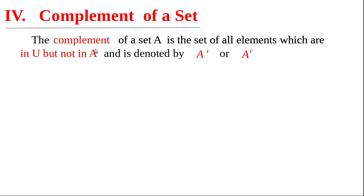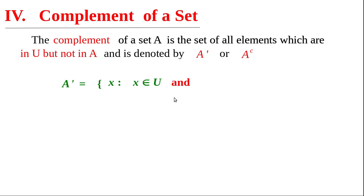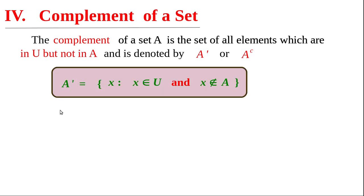Now we are going to write the set-builder form of A dash. A dash is a set containing many elements — let us represent an element by x. The common characteristic property of all elements of A dash is that these elements belong to U and at the same time are not in A. So the set-builder form of A dash is: A dash equals the set of all x such that x belongs to U and x does not belong to A.